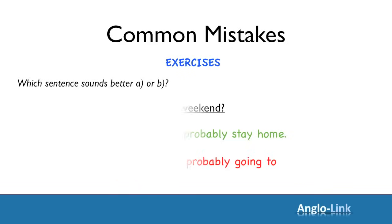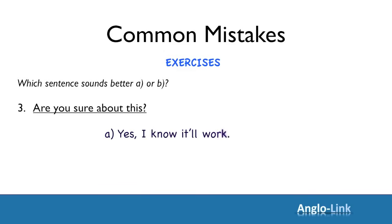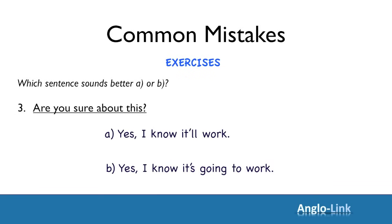Third example: someone asks are you sure about this? Would you say: Yes, I know it will work — or: Yes, I know it's going to work? The correct answer is B: Yes, I know it's going to work — because you're sure about it. You know.